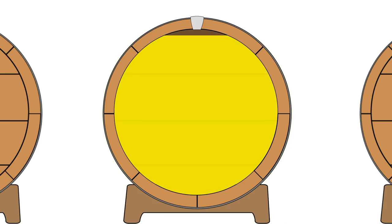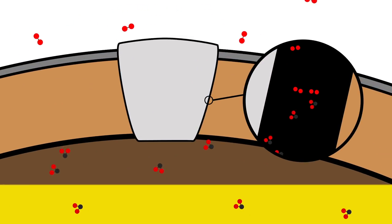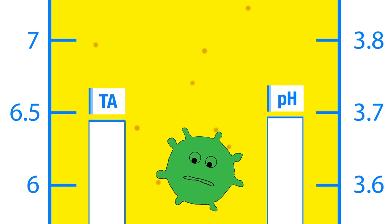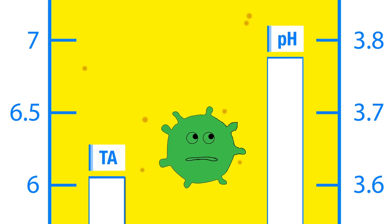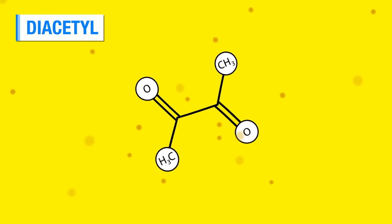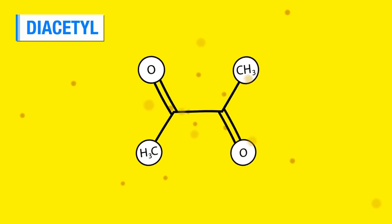There's several things that go on during malolactic fermentation. One, the process creates CO2 in the wine, which gives you some protection because you won't have any SO2 in the wine during that process. Also, you're going to reduce your total acidity in the wine. You will increase your pH. You will also create a byproduct called diacetyl, and in white wines that diacetyl comes across as buttered popcorn.